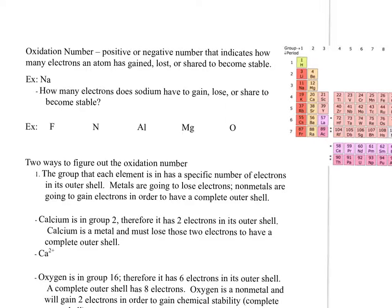We've talked about the different types of bonds and why bonds form, but now we want to get into how to write chemical bonds. In order to do that, we need to figure out the oxidation number of different elements. The oxidation number is a positive or negative number that indicates how many electrons an atom has gained, lost, or shared in order to become stable — not how many electrons it has in its outer shell.